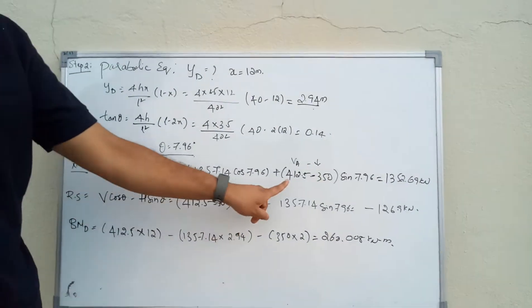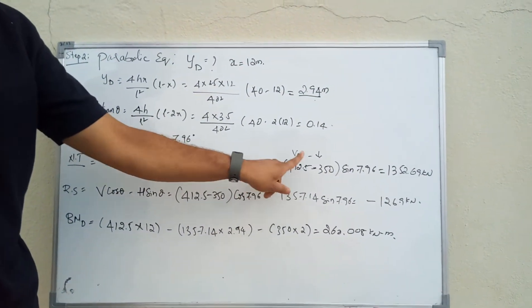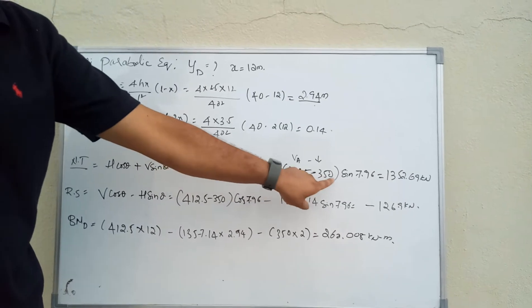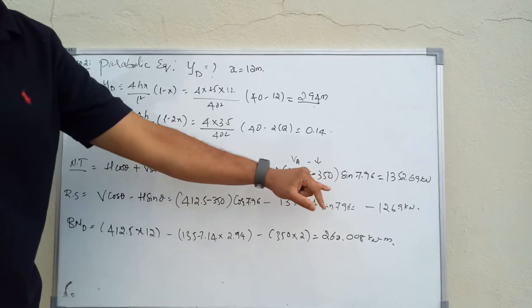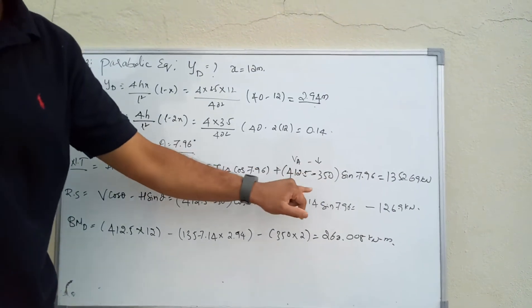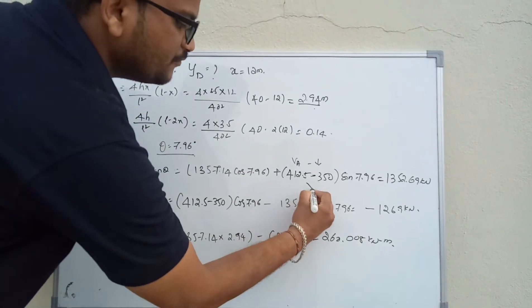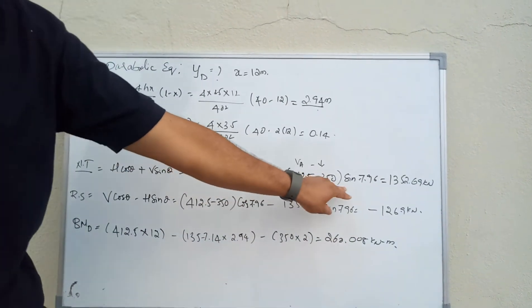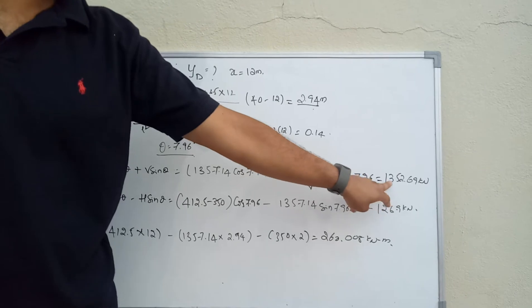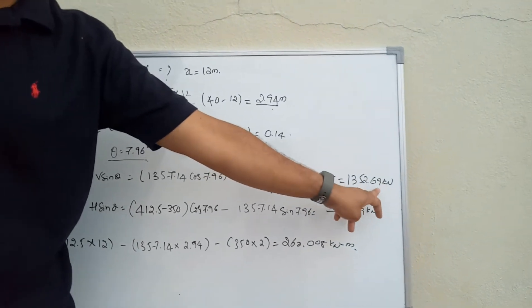412.5 is VA minus 350, which acts downwards. This net value we write as V sin theta. We got an answer of 1352.69 kilonewtons acting as normal thrust.